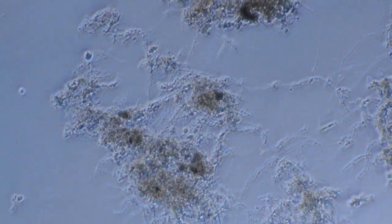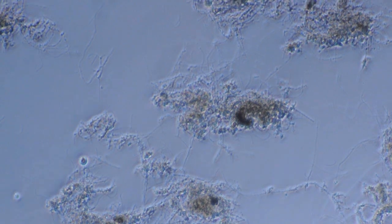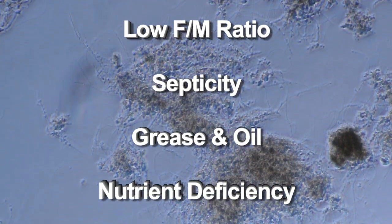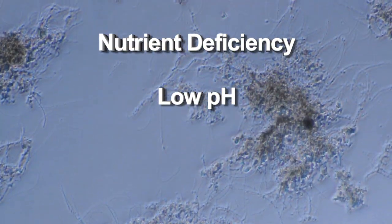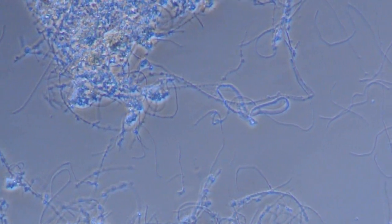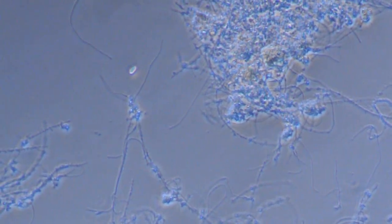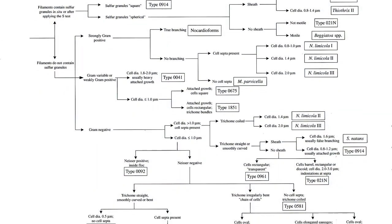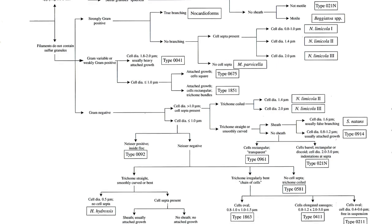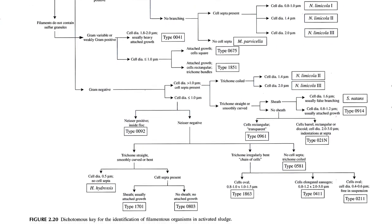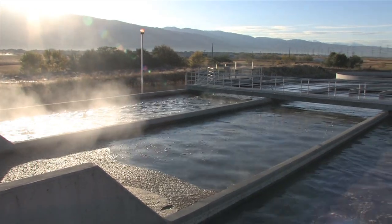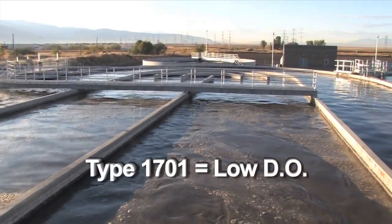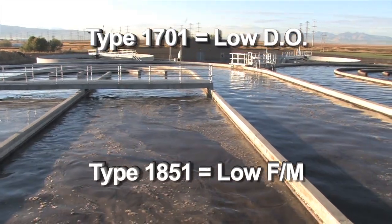Filament tracking can be another powerful tool to monitor conditions in a wastewater treatment plant. The abundance and type of filaments present can indicate various process conditions such as low dissolved oxygen, low F-to-M ratio, septicity, excessive grease and oil, nutrient deficiency, and low pH. Tracking filaments requires staining tests, tests for sulfur granules, cell size, presence of septa, and identification of attached growth. Jenkins, Richards, and Diager developed a chart for the evaluation process — for example, Type 1701 indicates low DO, while Type 1851 indicates a low F-to-M ratio.